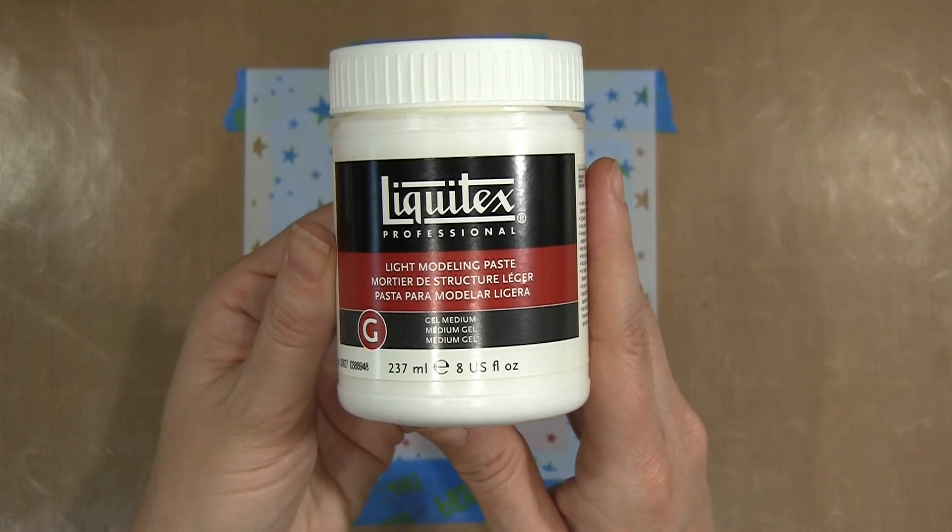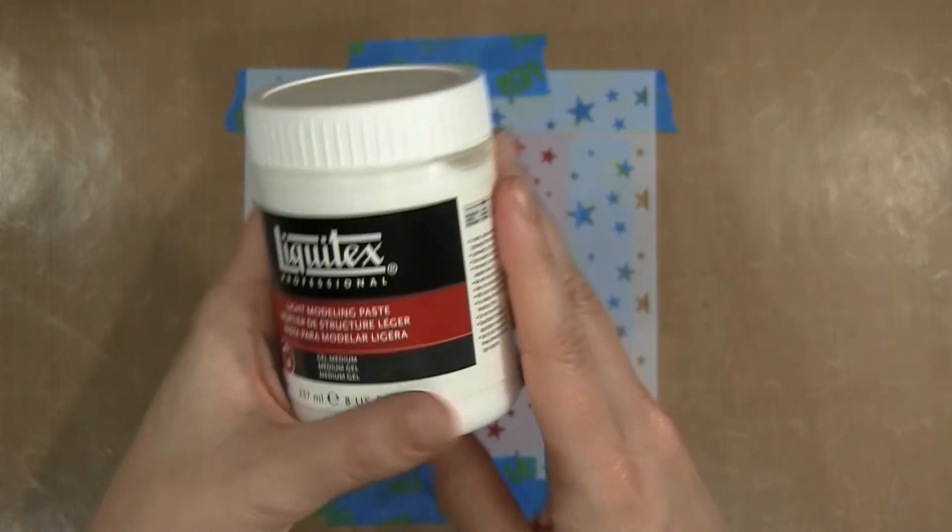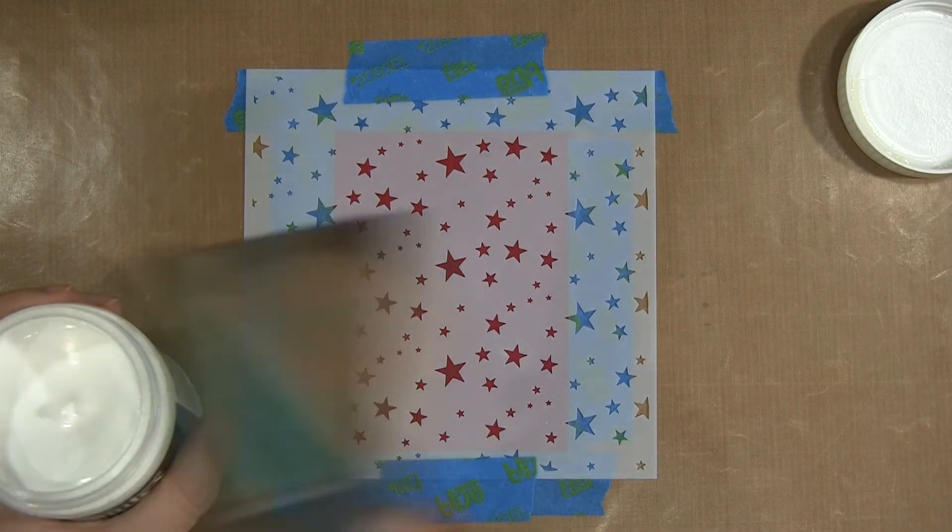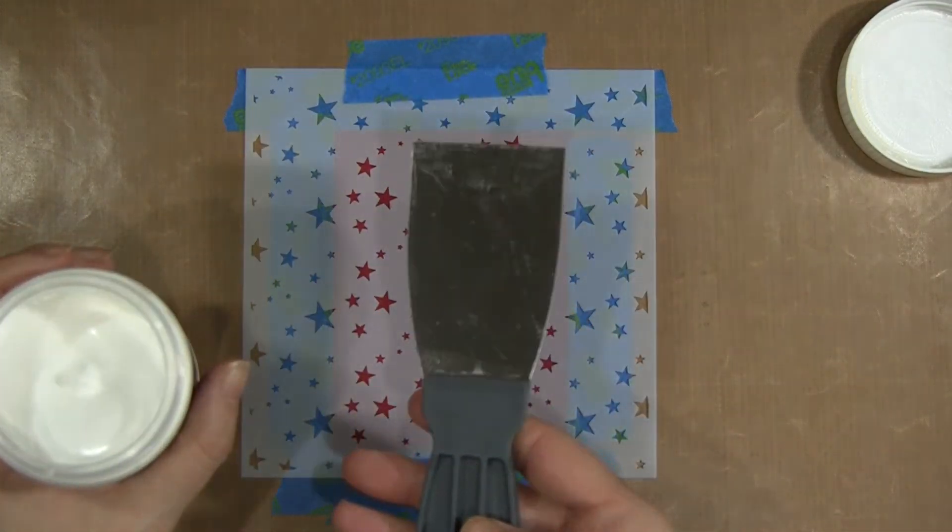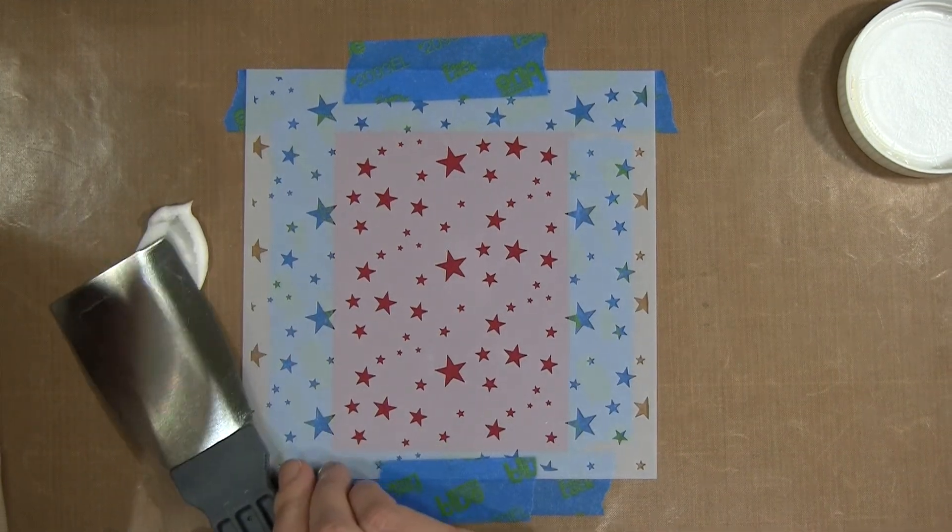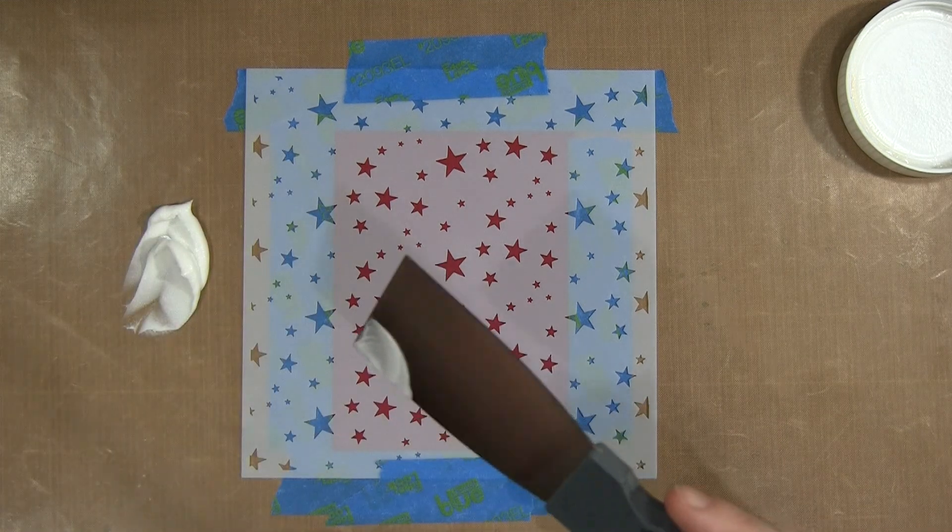To create the texture and raised look of the stars, I'm using light modeling paste from the art section of my craft store. There are lots of products you can use to recreate this technique. You can also use texture paste or gel or even lightweight spackling from the hardware store. I've done all three successfully.